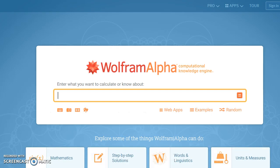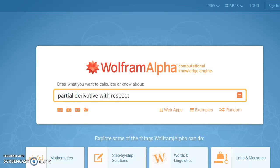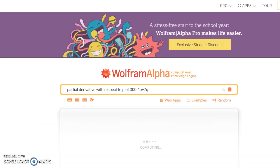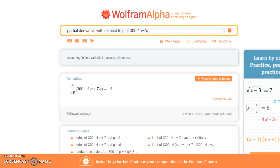We can start by finding the partial derivative with respect to P of 300 minus 4P plus 7Q, which is our function X. Our partial derivative here comes out to be negative 4, which is relatively simple. We might have been able to figure this out by hand.